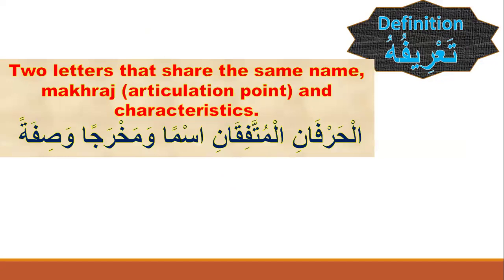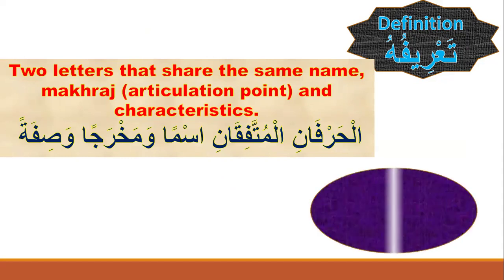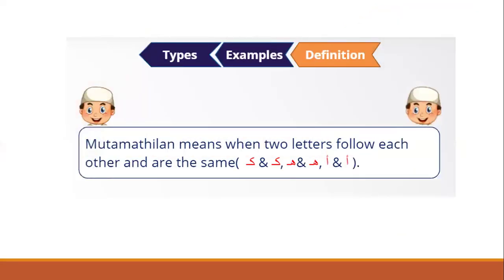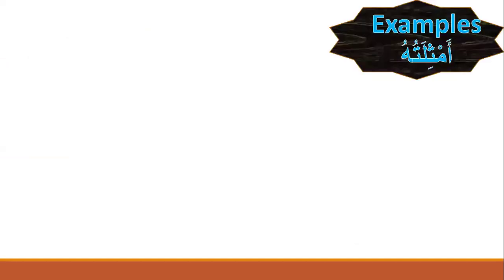Let's start with the definition of mutamathilan. Mutamathilan means two letters that share the same name, makhraj (articulation point), and characteristics. This occurs when two letters follow each other and are the same, such as ba-ba, mim-mim, and so on.